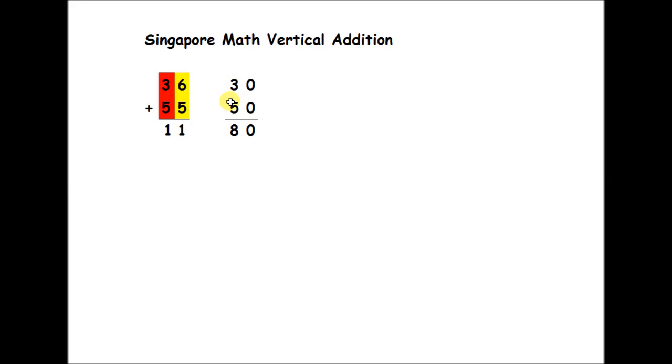It's not really 3 plus 5. It's really 30 plus 50. That gives us 80. Now, I'm writing this to the side, but if you're more comfortable using mental math, you could also just add this in your head and then write the answers down here.